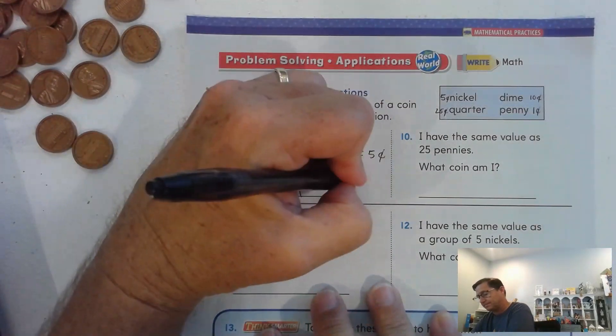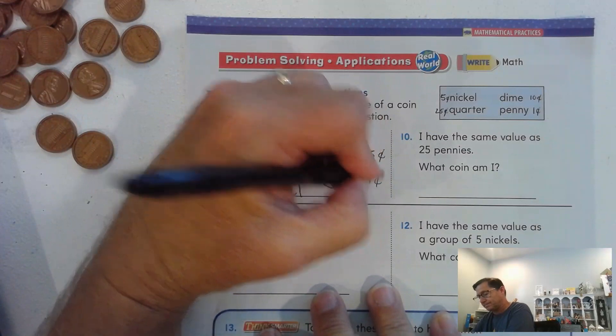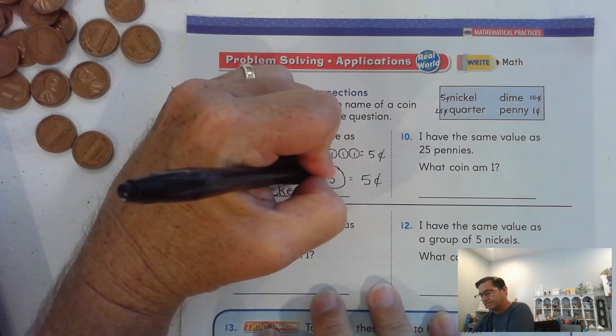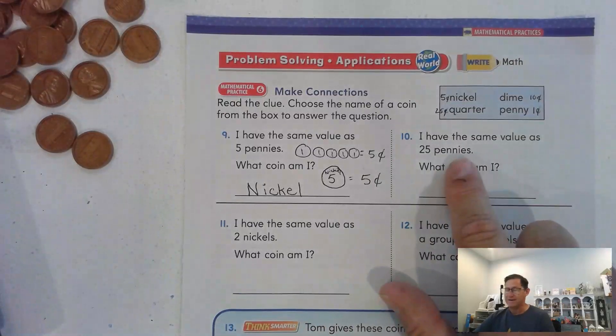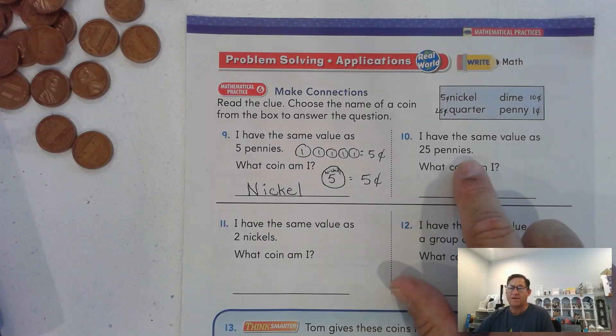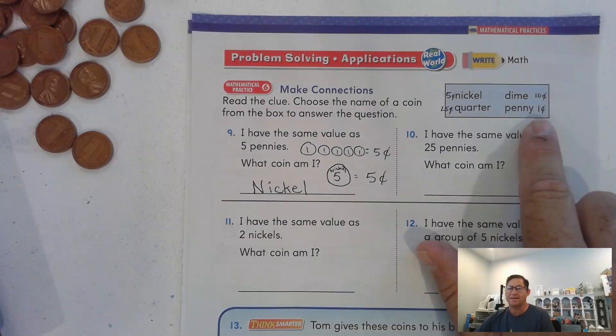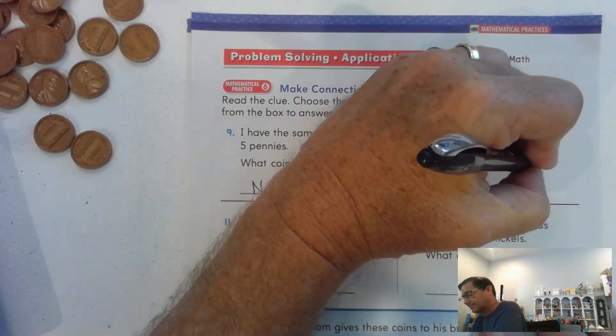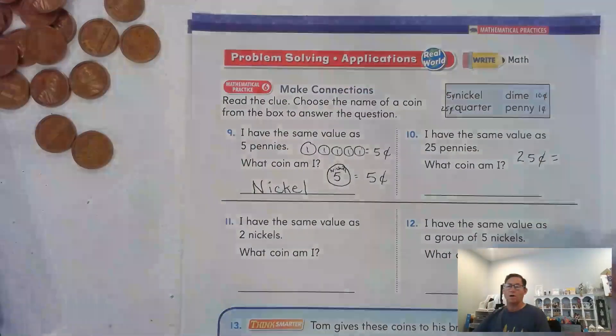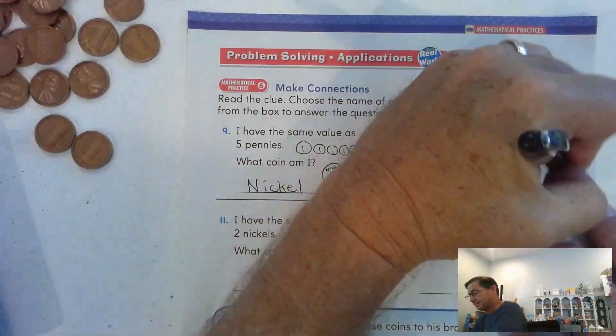I have the same value as 25 pennies. I'm not going to draw out 25 circles. Twenty-five pennies, each penny is worth one cent. So I have 25 ones. 25 ones is 25 cents. So what coin equals 25 cents? A quarter.